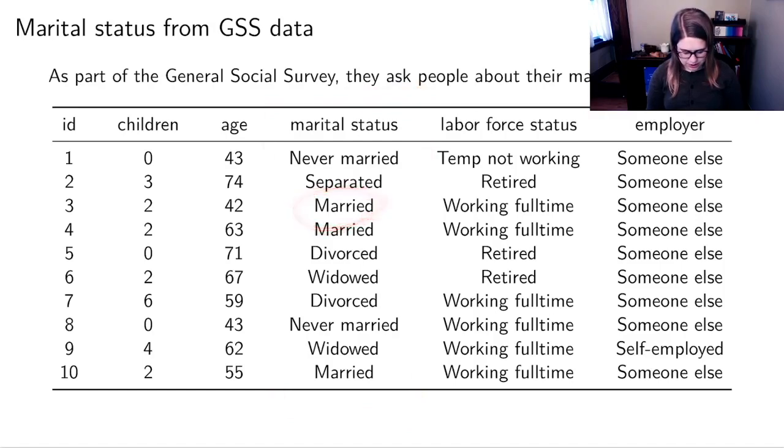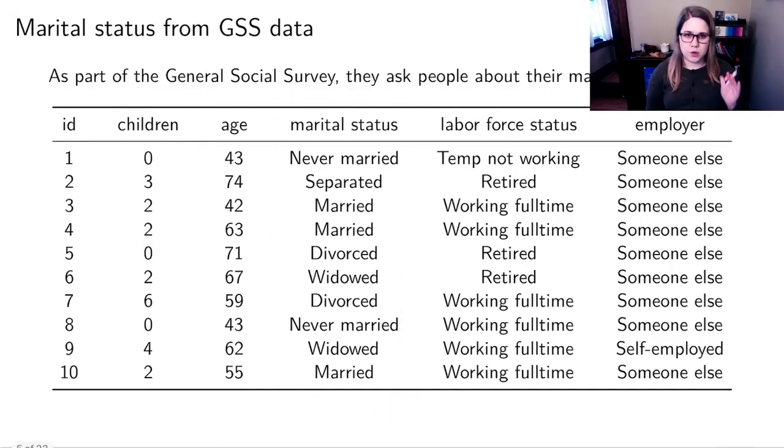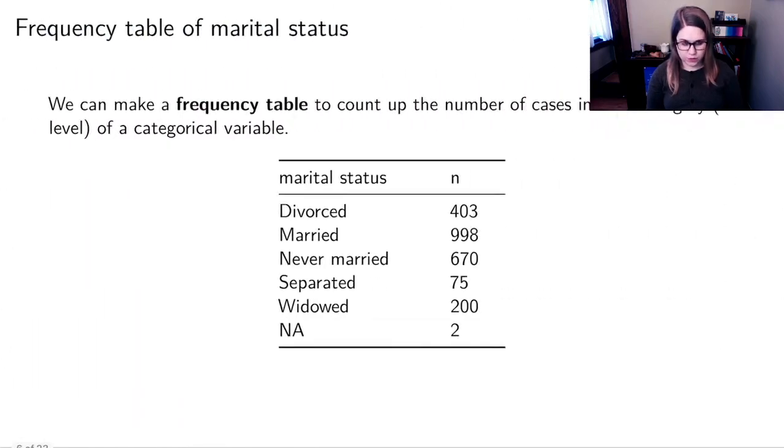You can see some people are married, some people are divorced, widowed, never married, there's a number of different possible marital statuses. And this marital status variable is categorical. So we're going to try doing some summary statistics, which are numbers and some data visualizations, which are pictures.